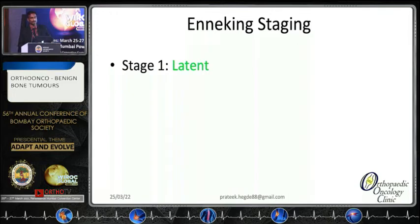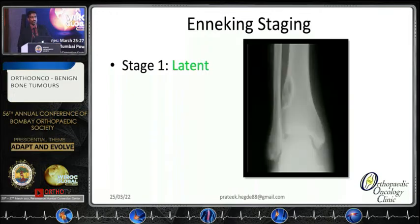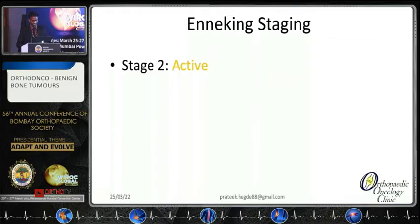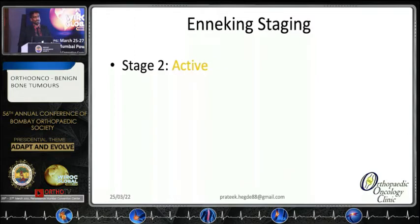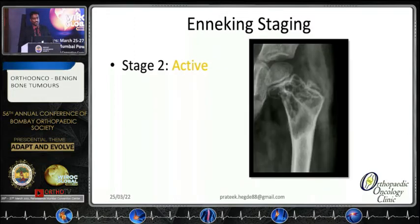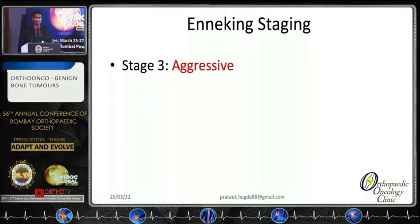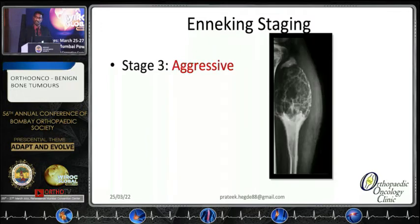Stage 1 or latent lesions are incidentally found and do not progress, like a non-ossifying fibroma. Stage 2 or active lesions, like this proximal femur aneurysmal bone cyst, will be respectful of boundaries but will go on progressing and need some kind of intervention. Then there are aggressive lesions which do not respect the boundaries and definitely need intervention, like this proximal fibula giant cell tumor.